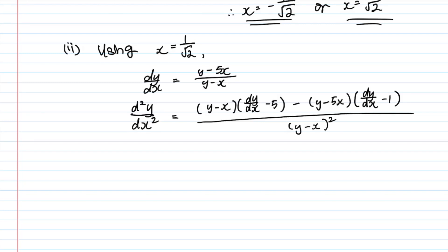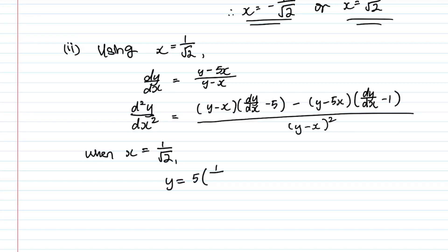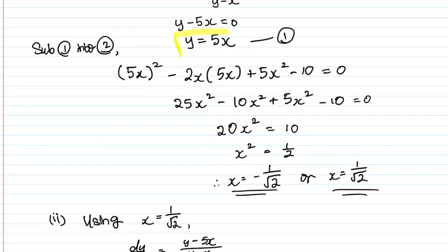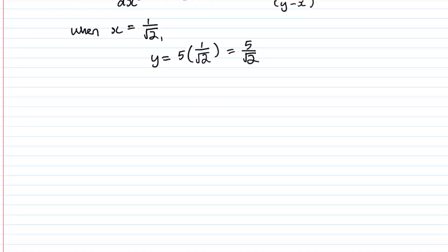Before substituting, we need the y-value at x = 1/√2. Since y = 5x, we get y = 5 × (1/√2) = 5/√2. This is the y-coordinate of the stationary point. Now we can substitute both x = 1/√2 and y = 5/√2 into the d²y/dx² expression.